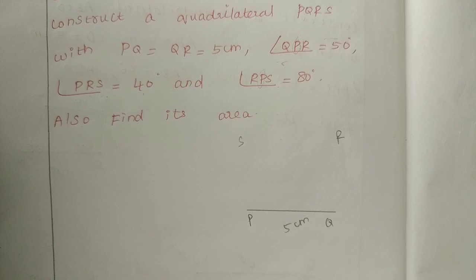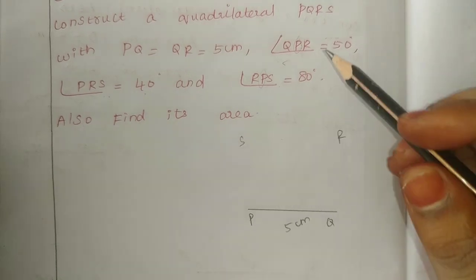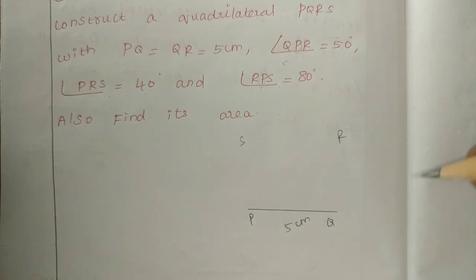The three angles are: angle PRS, angle RPS, and angle QPR. These are the three angle measures we will use for the construction.